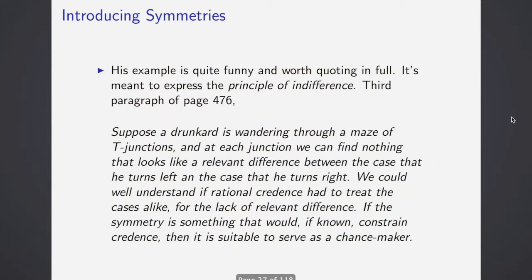Now that we know a little bit about what he means by chance and credence, let's take a look at some candidates for chance makers, what he calls symmetry and frequencies. This is quite funny, I think it's worth quoting in full. It's meant to express the principle of indifference. Suppose a drunkard is wandering through a maze of t-junctions, and at each junction, we can find nothing that looks like a relevant difference between the case that he turns left and the case that he turns right. We could well understand if rational credence had to treat the cases alike for the lack of relevant difference. If symmetry is something that would, if known, constrain credence, then it would be suitable to serve as a chance maker. Lewis notes that an unrestricted principle of indifference is inconsistent, because you can always poke up your properties and get it to say anything you like.